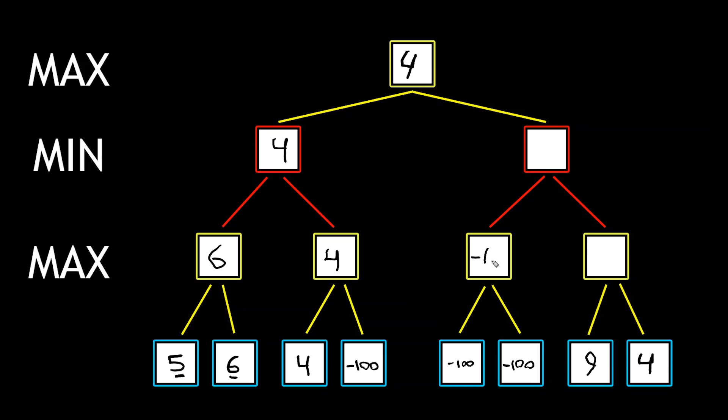So we temporarily fill that in, that's negative 100, and then we check the other node. The other node is also negative 100, so this just stays at negative 100. The minimizer player sees it has a negative 100 to choose from, and temporarily sets it to negative 100, and then it looks to the right.